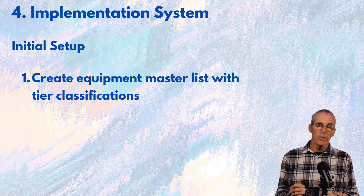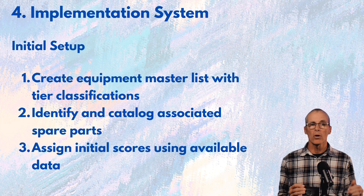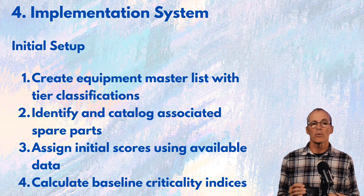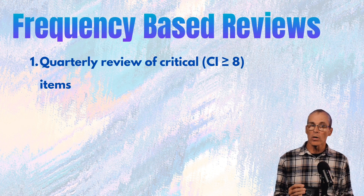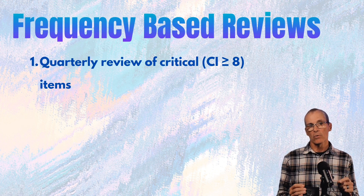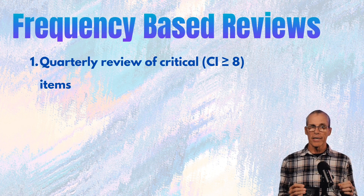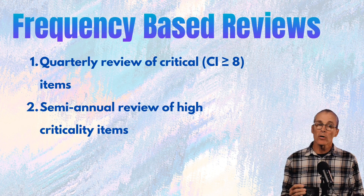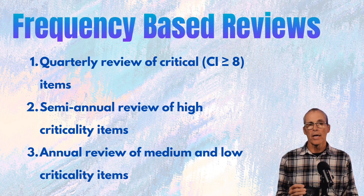Here's how we implement this. We're going to create the master list and tier classifications, identify and catalog all spare parts, assign initial scores using available data, and then calculate baseline criticality indices. To keep it current, we use frequency-based reviews: quarterly for anything over an eight in the criticality index, semi-annually for high criticality, and annually for medium and low.